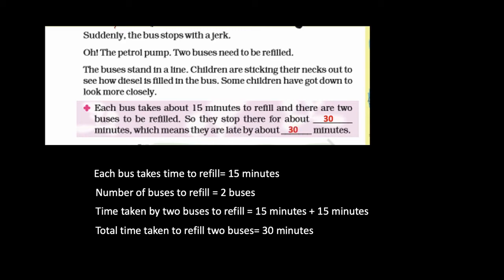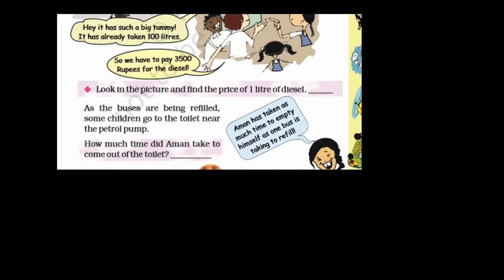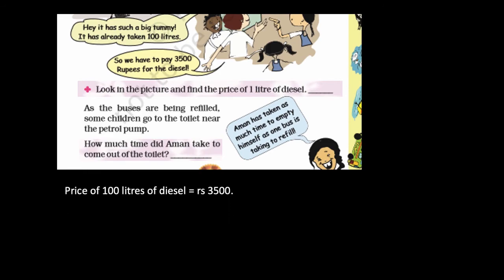Students notice the bus has a big tank — it has already taken 100 liters of diesel. They have to pay ₹3500 for the diesel. We calculate the price of 1 liter: 3500 divided by 100 equals ₹35 per liter of diesel.